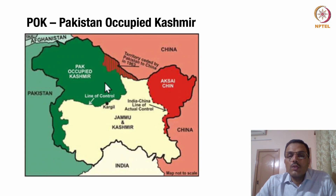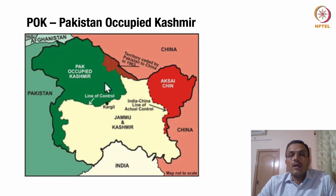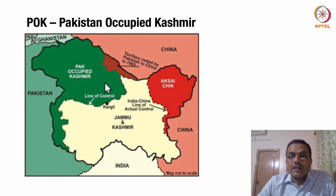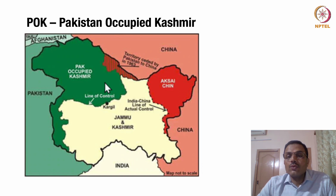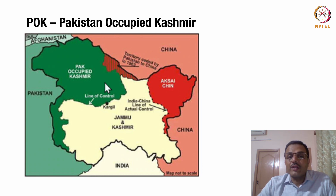Friends, to conclude the discussion on the territory of India, it will not be complete without discussing the kind of territory that is, under international law, some kind of disputed territory as claimed by two or more neighbors — one is Pakistan, the other is China. These two neighbors have never accepted India's territorial sovereignty over a lot of land and territory that India claims as its own.